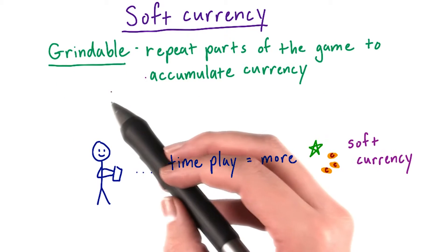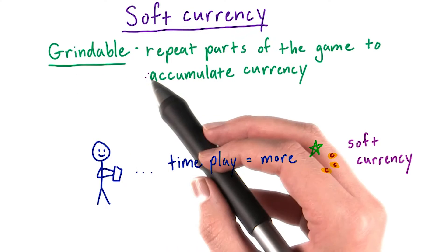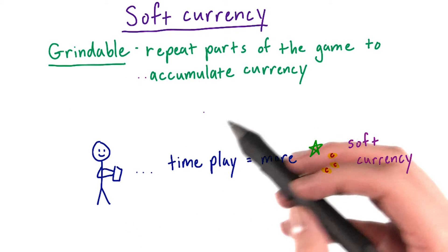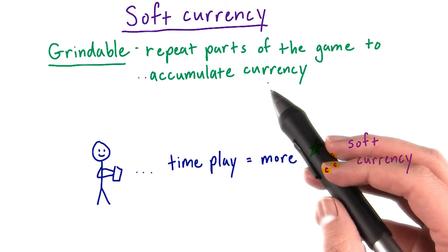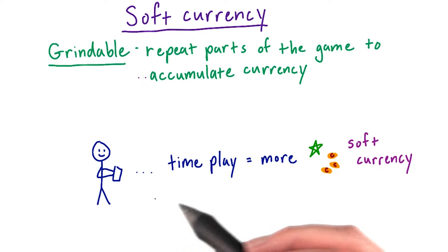Soft currency is easy to get because it's very grindable. Grindable just means that you can play parts of the game, like levels or mini-games, over and over again to accumulate soft currency. So the more time you spend playing a game, the more soft currency you slowly accumulate.